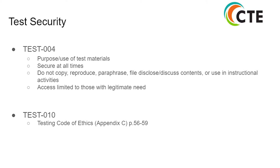Test security, found on pages 19 through 20, states that secured test materials developed by the state of North Carolina may not be used for purposes other than those that are approved. Secured test materials include, but are not limited to, item banks, operational and field test books, test questions or test book sections, and answer documents. Secured test materials may be either electronic or paper format — please make sure these items are secured at all times.